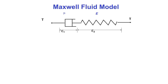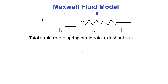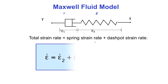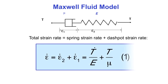We can use these rules to derive equations for the different linear viscoelastic models. Starting with the Maxwell fluid model: the total strain is epsilon 1, the strain in the dashpot, plus epsilon 2, the strain in the spring. Therefore, the total strain rate must be the strain rate in the spring plus the strain rate in the dashpot — epsilon dot equals epsilon 2 dot plus epsilon 1 dot.